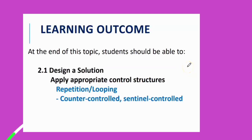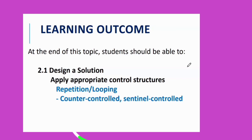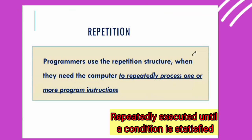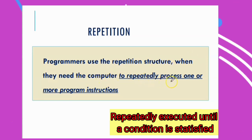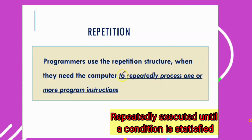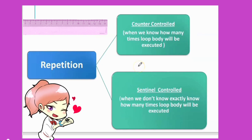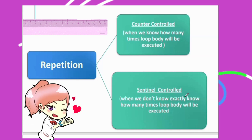Today we will discuss the last part of design a solution: control structures — repetition. We have two types of repetition: counter control and sentinel control. Programmers use the repetition structure when they need the computer to quickly process one or more program instructions repeatedly. Counter control is used when we know how many times the loop body will be executed; sentinel control is used when we do not know exactly how many times.